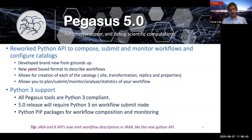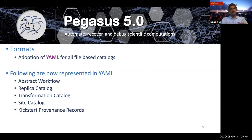As far as the other APIs go — for example, the Java and R APIs — they will now emit workflow descriptions in YAML format like the new Python API. We're deprecating the old XML-based formats and will remove them starting release 5.1. We've embraced YAML as our choice of representation for almost everything in Pegasus.